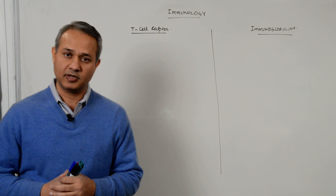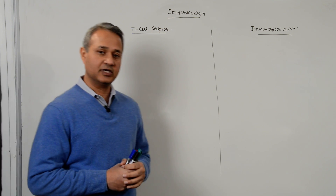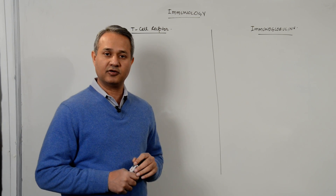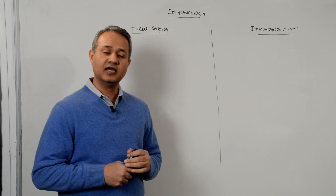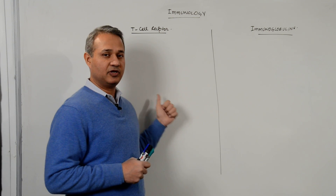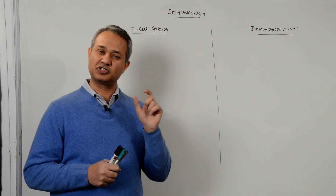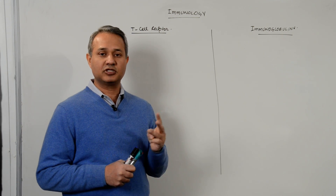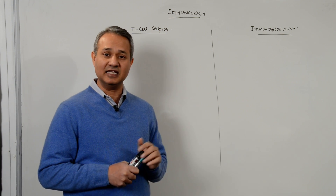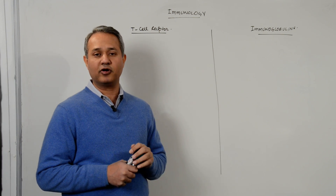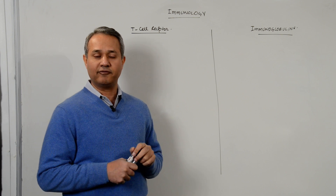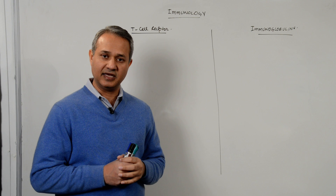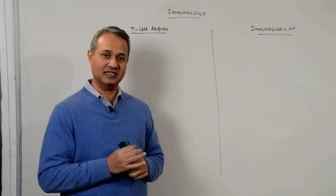Guys, this is Doctor Mobin. We are talking about immunology, and today's lecture is about T cell receptors. The important things today are: number one, understanding how the T cell receptor structure is; number two, how it is formed; number three, how it functions in combination with CD3; and number four, what is the role of T cell related molecules in SCID, or severe combined immunodeficiency disease.